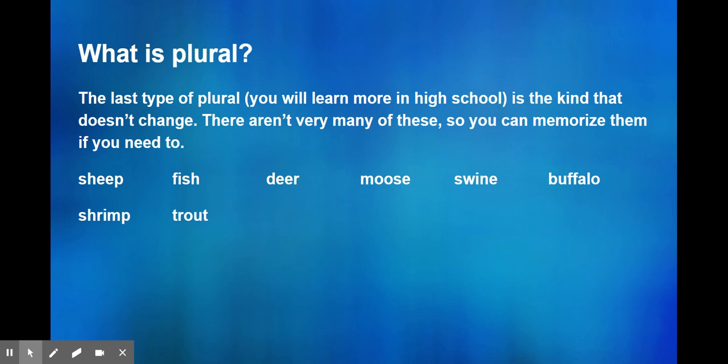So with these words, what you can do is say one sheep or 20 sheep. There's no difference in the singular and the plural. No matter how you use it, you just leave the word as it is. You wouldn't say mousses or shrimpses. So just leave these be.